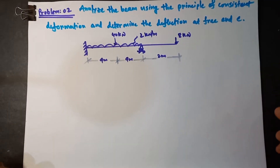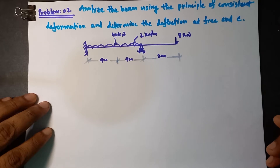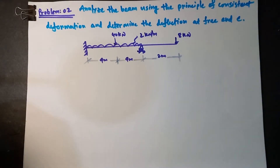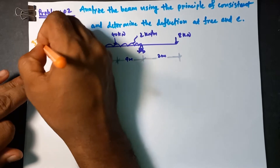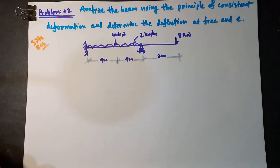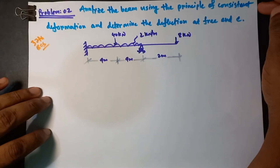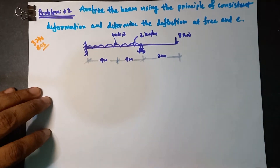All right. I am now going to use the force method. Here I have problem one. This is problem 2. It is 37 BCS. I am now going to analyze the beam using the principle of consistent deformation. The principle of consistent deformation is the force method — nothing but the force method. I am now going to show it.